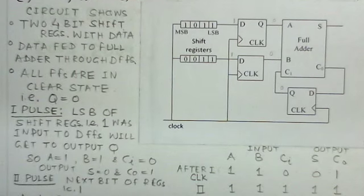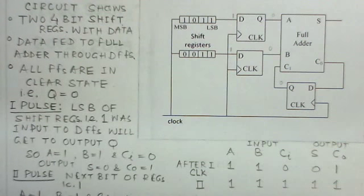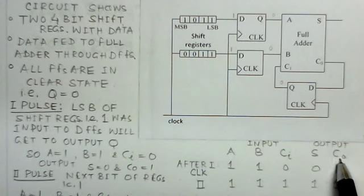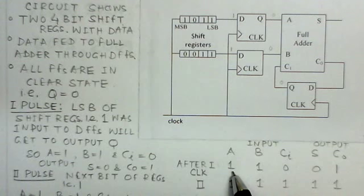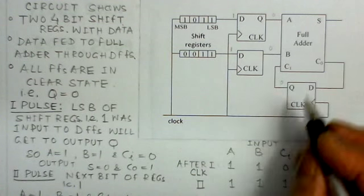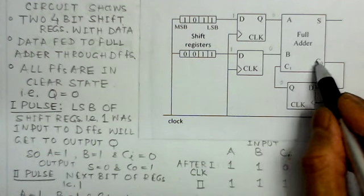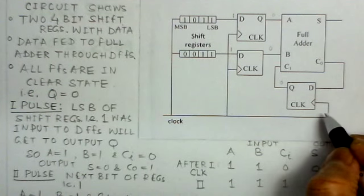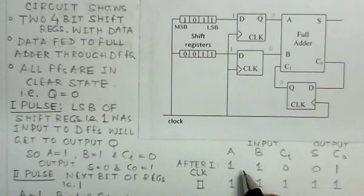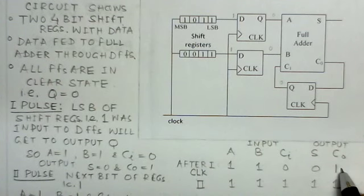The clock pulse transfers data D to the Q output. Looking at the truth table with three inputs A, B, and carry-in Ci: after the first clock pulse, A is one because that data is one, B is one, and carry-in Ci is zero because there is no prior carry waiting. So one plus one gives sum zero with carry one — after the first clock pulse, sum is zero and carry-out is one.